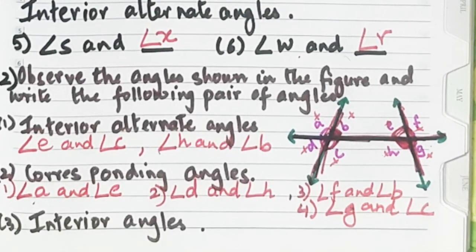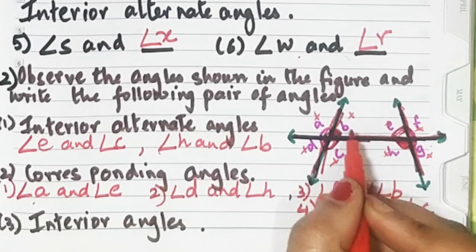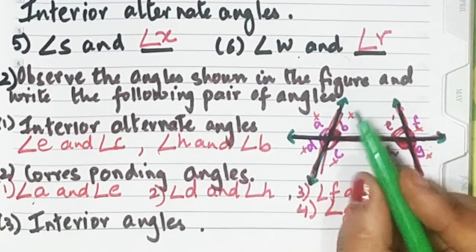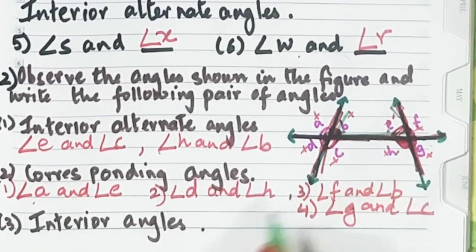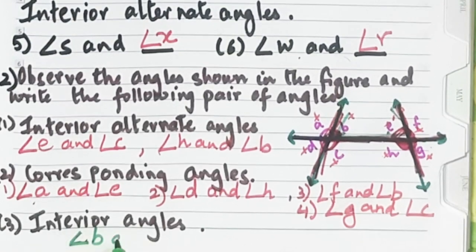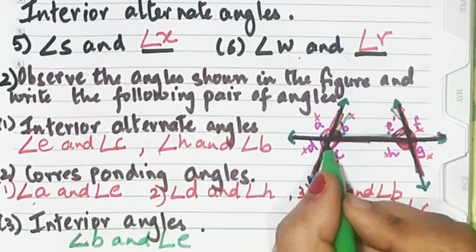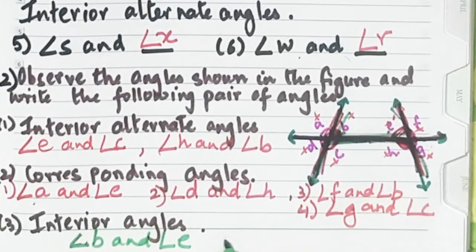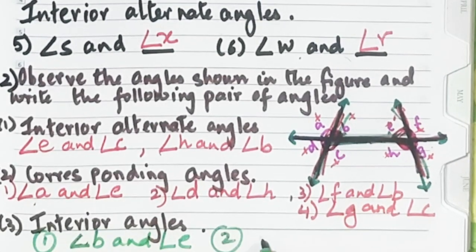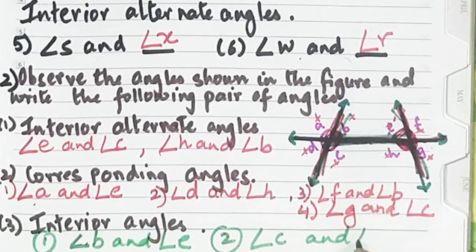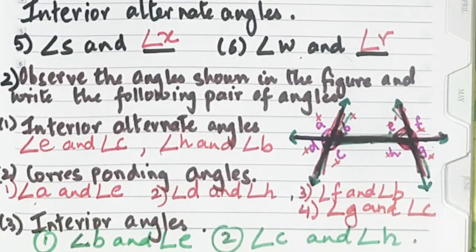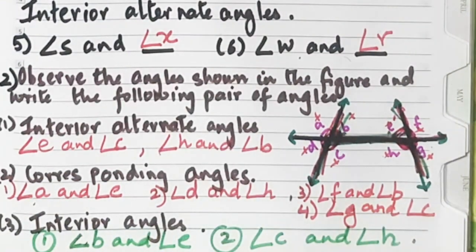The third part asks for interior angles, using the letter C. Angle B and angle E form a C, and angle C and angle H also form a C. So the two pairs of interior angles are angle B and angle E, and angle C and angle H. All three concepts — corresponding angle, interior angle, and alternate angle — are now covered.